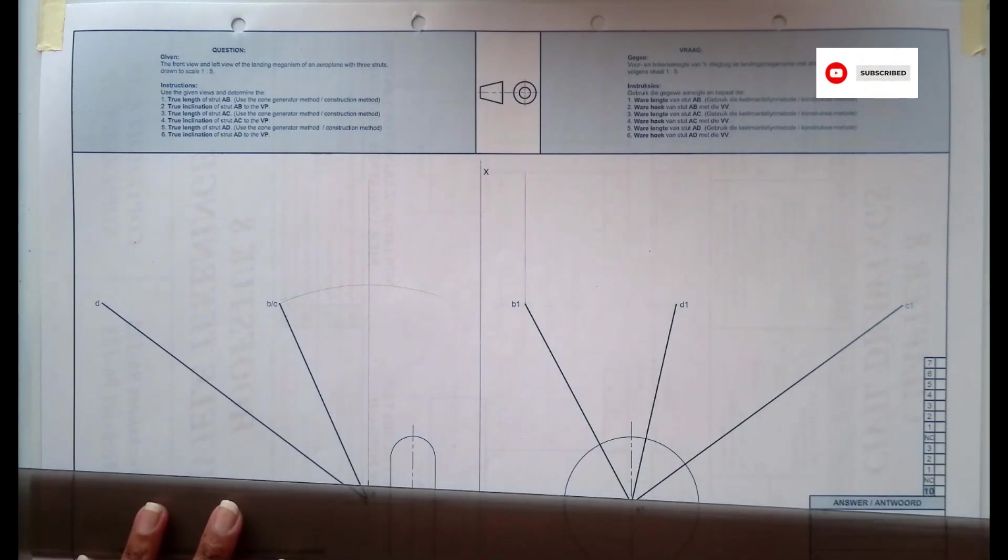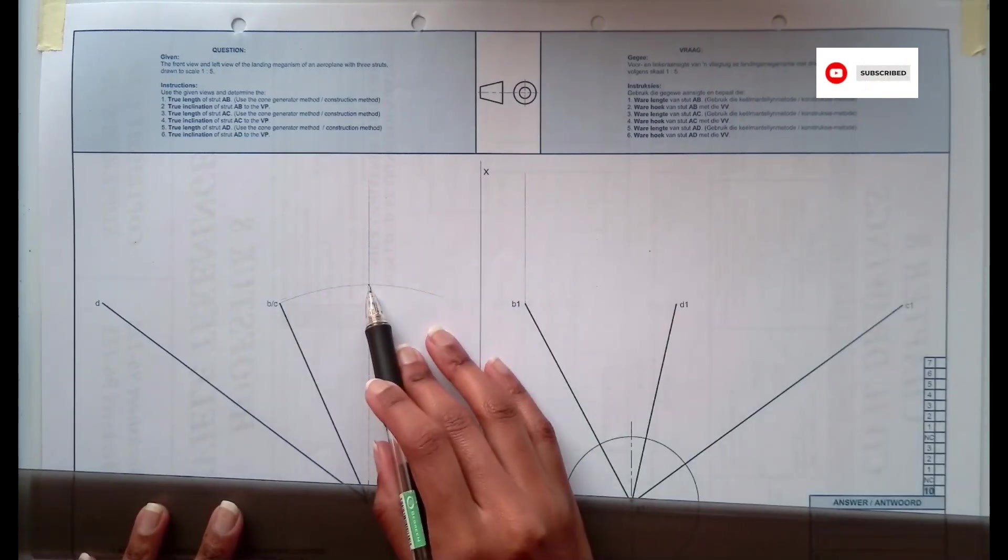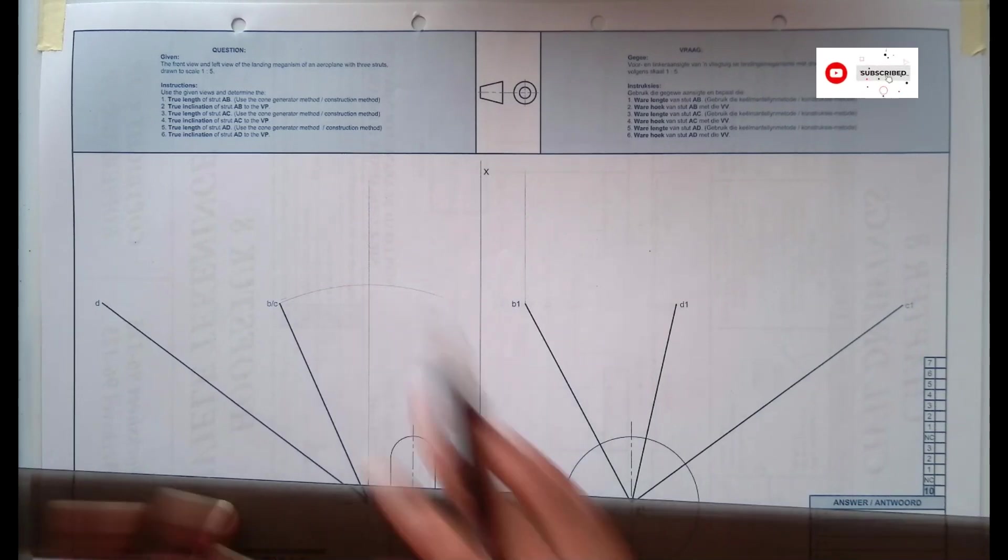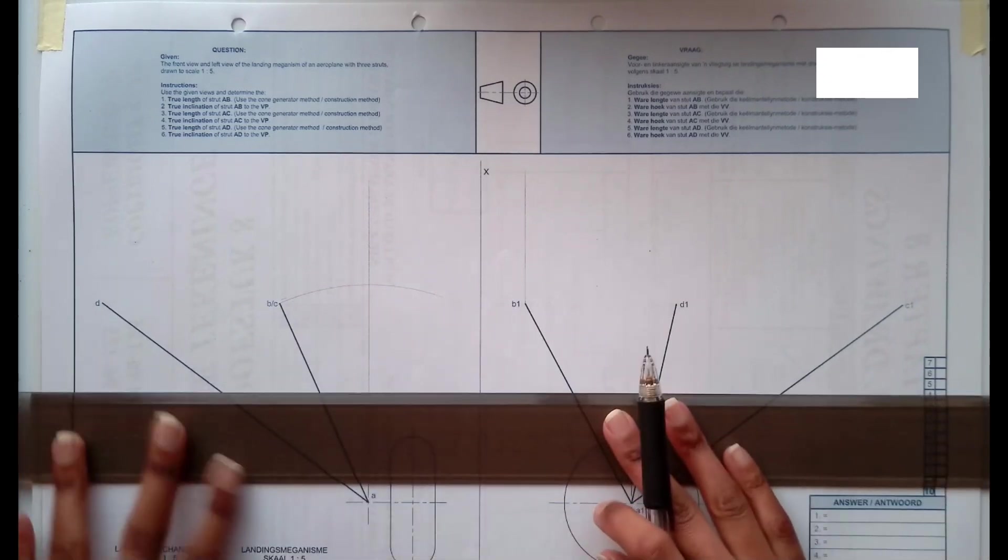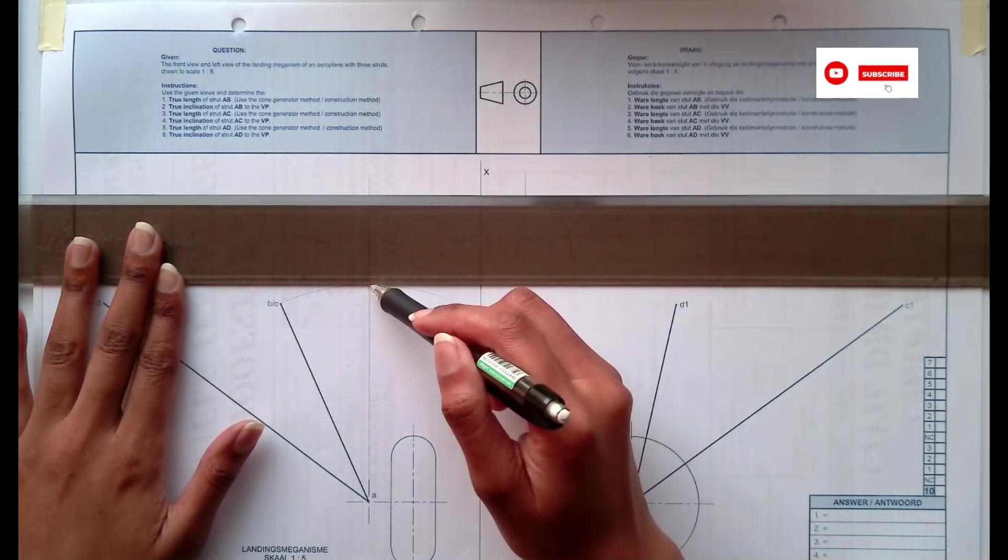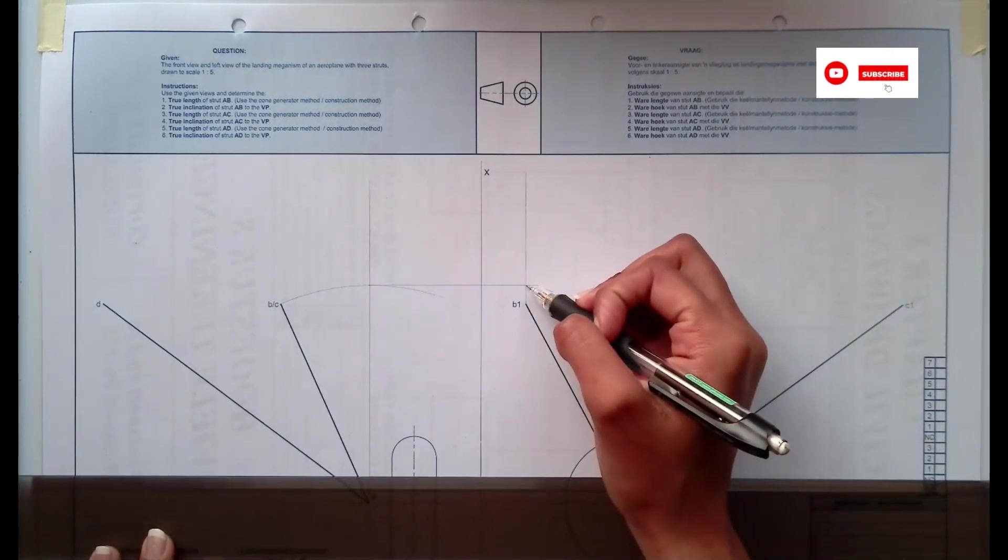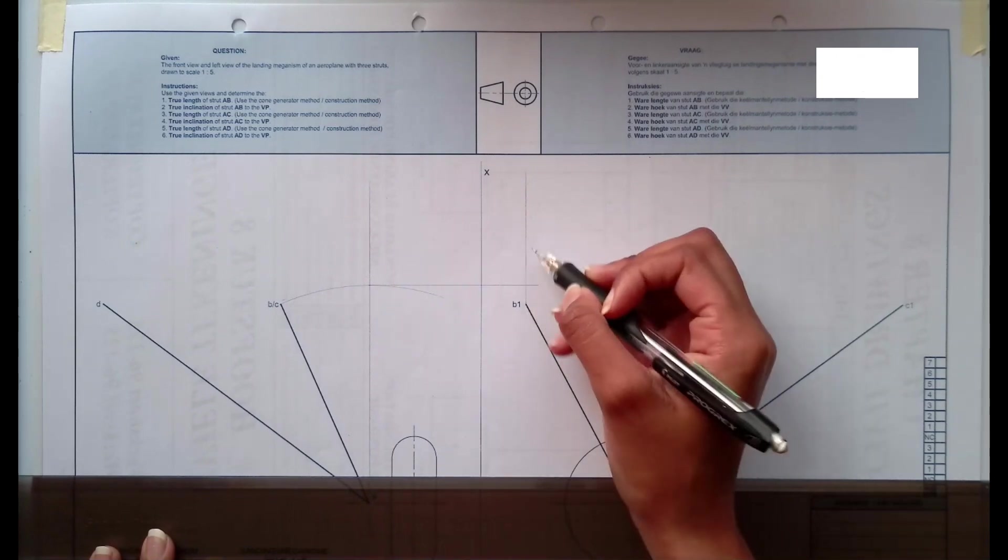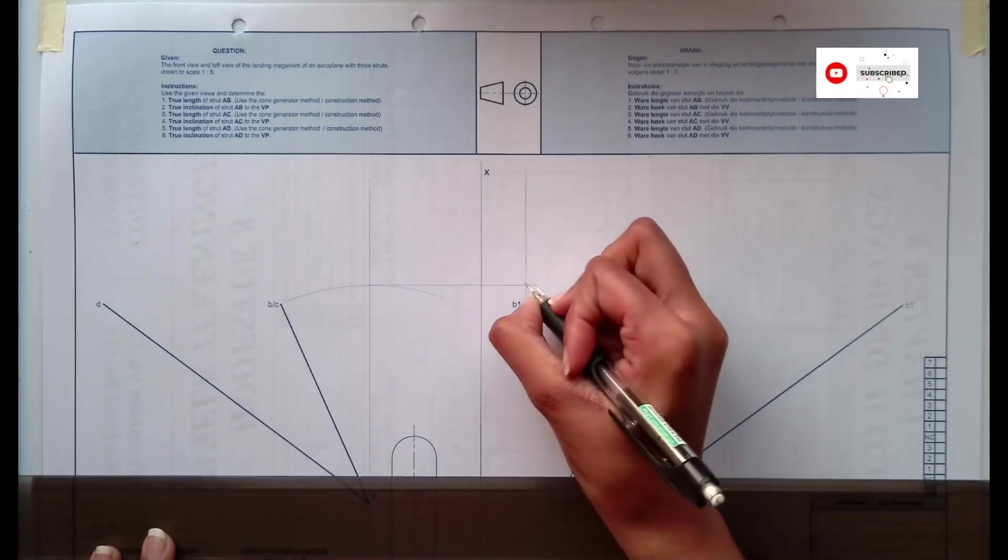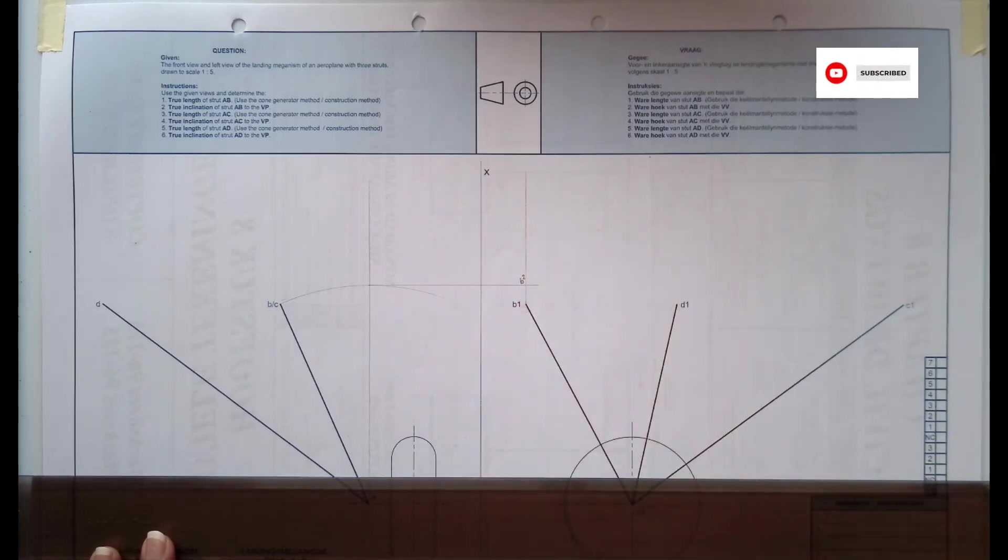Once that is done, I then need to extend this point where it intersects with the vertical plane that is parallel to my XY. I'm going to extend that point to the side. Where it intersects with my line from B1, that's where I'm going to get my B2. So that is going to now be my new B2.